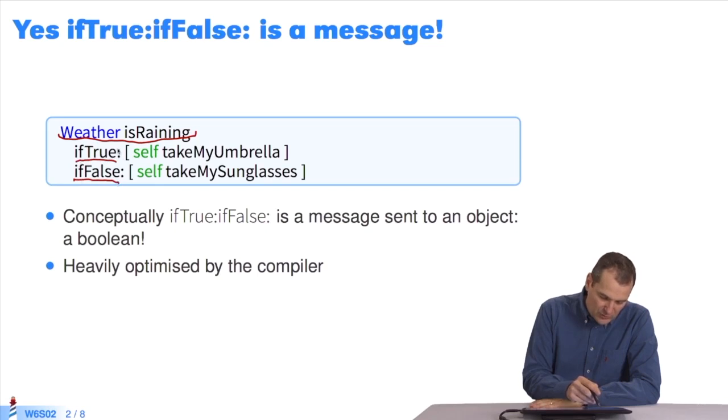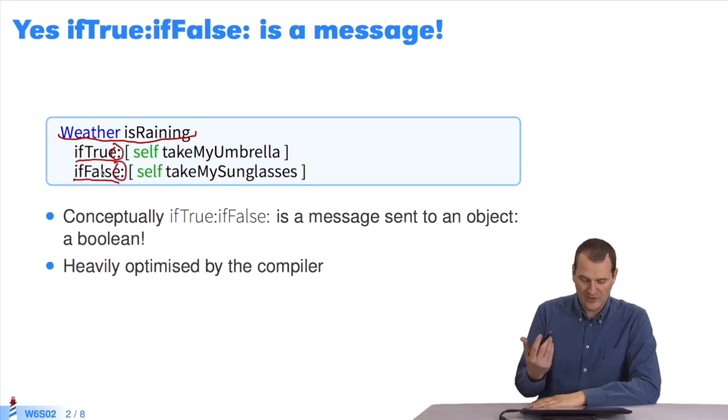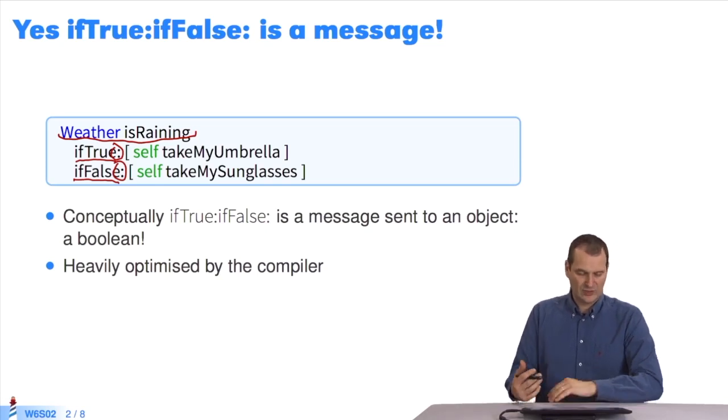This means they're keyword messages. The message if-true, if-false is a keyword message, and it's sent to a boolean instance. In reality, it is heavily optimized by the compiler and not really sent, but conceptually speaking, it is.